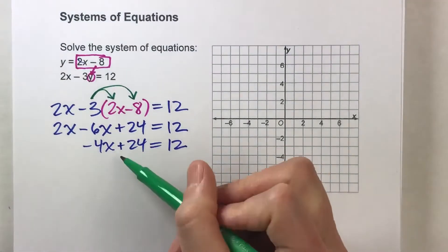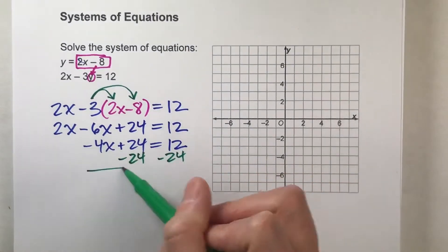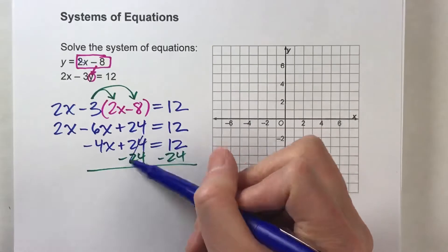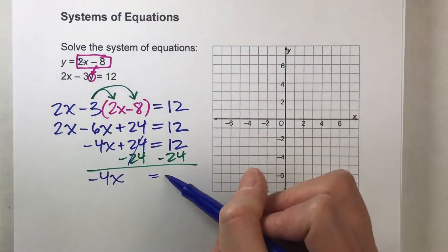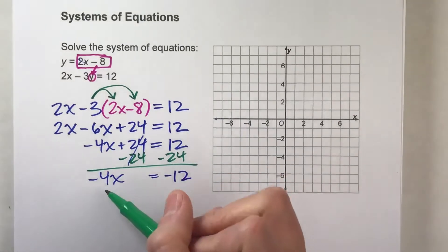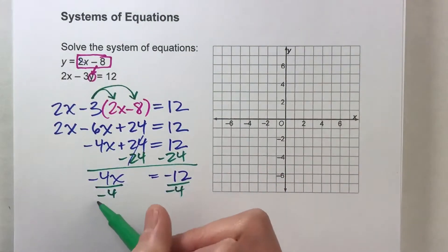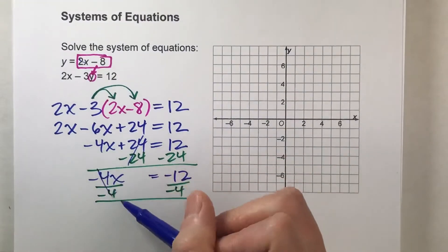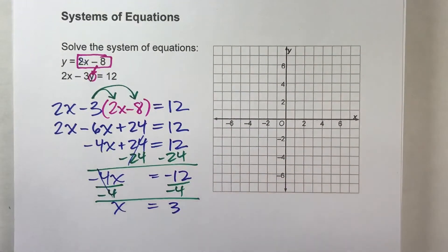We're going to subtract 24 on both sides. When we do that, the 24s undo each other, giving us negative 4x equals negative 12. Last step: divide both sides by negative 4. The negative 4s undo each other, and x equals positive 3.